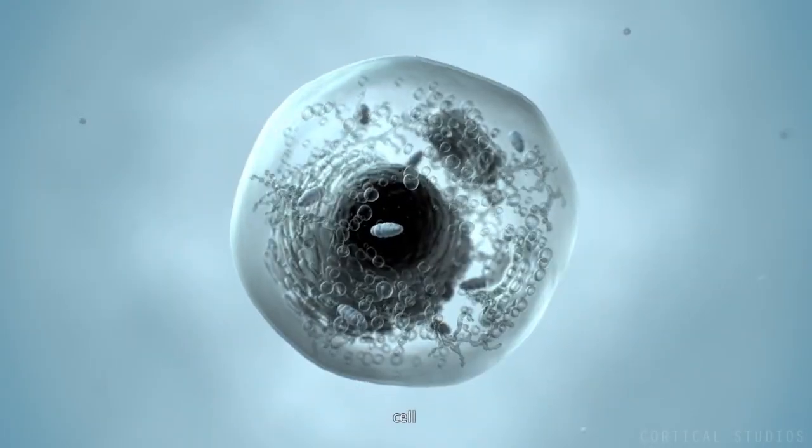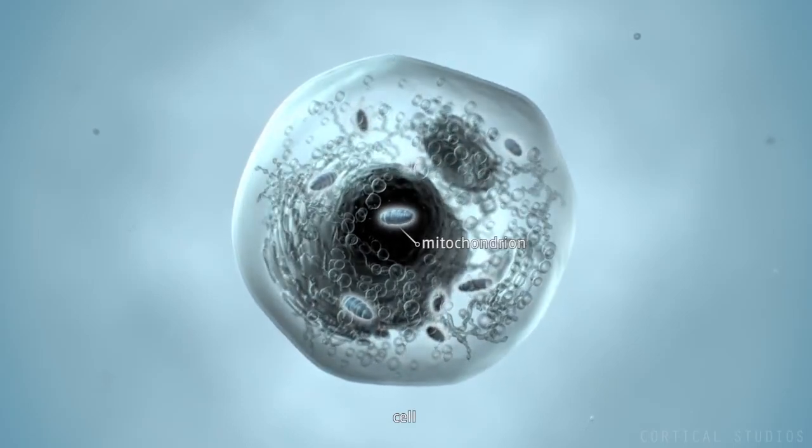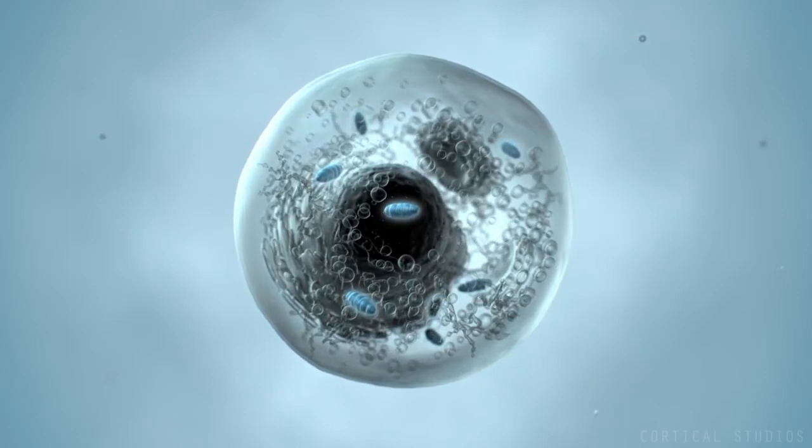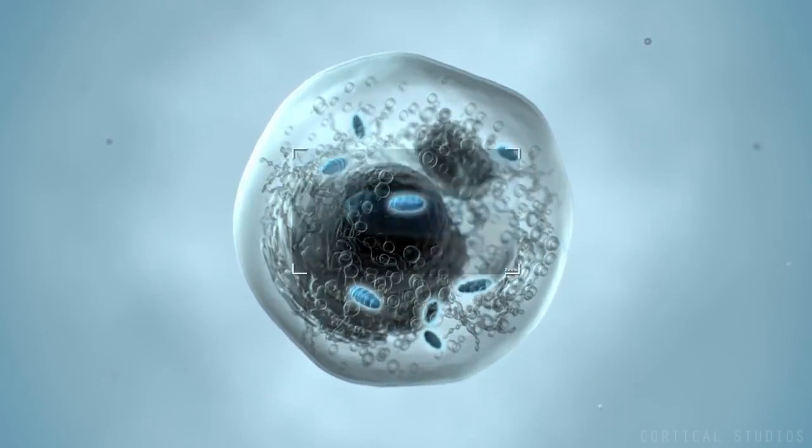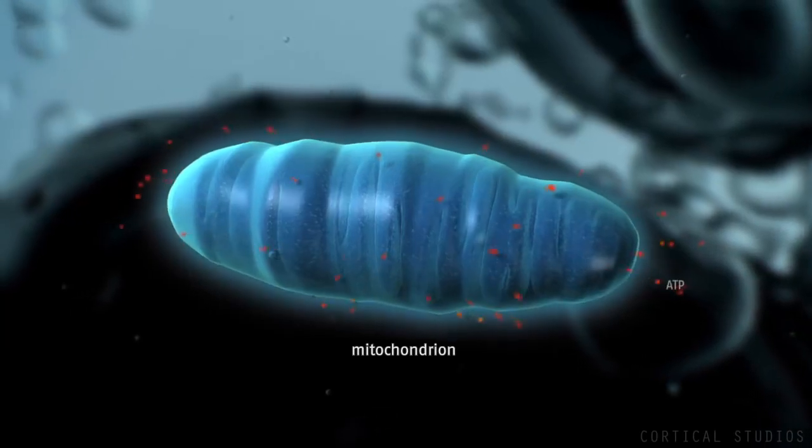Our body is made up of trillions of cells. They all require energy to function. This energy is created within ourselves in the mitochondria. Here, food is converted into chemical energy called ATP.